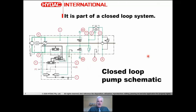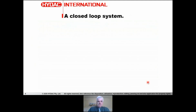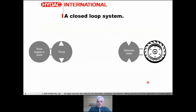A closed loop system is more complicated. This is the schematic symbol for a closed loop pump and motor. Applications for closed loop systems include wheel drive on a loader, where wheels are driven by hydraulic motors. An engine or drive motor drives a pump, the pump drives a hydraulic motor, and the motor drives the wheels — that's how power is transmitted.